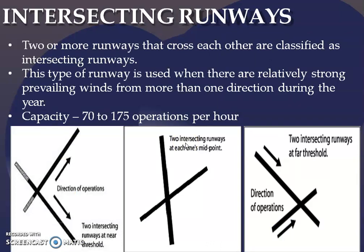The next is an intersecting runway. Here two or more runways cross each other, that is it intersects. This will be provided when the strong prevailing winds are there in more than one direction. The capacity, when we see the operations, is around 70 to 175 operations per hour. Here the crossing is at the midpoint of the runway.